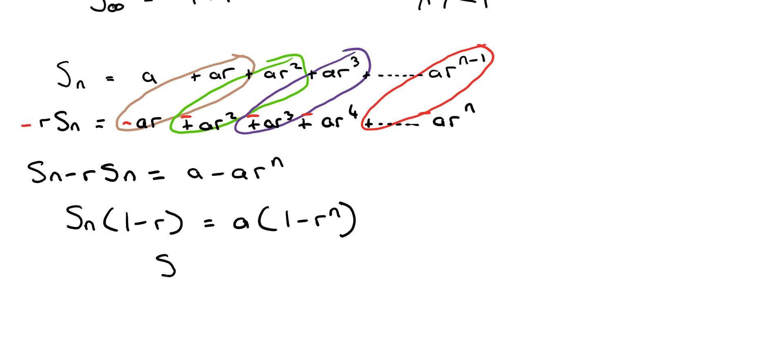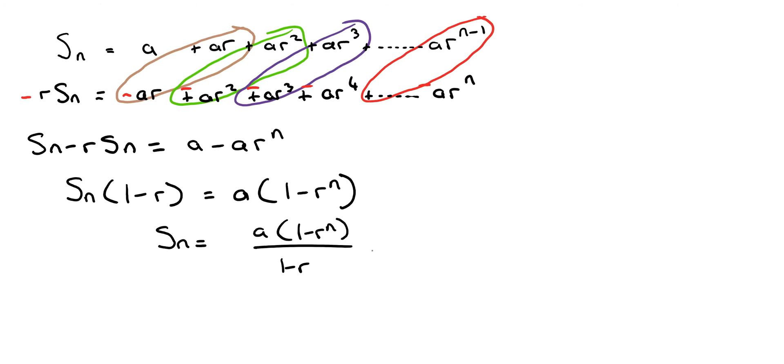Then Sn is equal to a times one minus r to the power of n, divide both sides by one minus r. So this is the sum of a geometric series right here, but we know we want to do it for infinity.